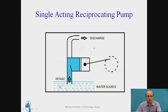The atmospheric pressure acts on the water surface. This atmospheric pressure is higher compared to the vacuum created inside the cylinder, and due to this, water automatically rushes inside the cylinder portion. The cylinder gets filled with water as the piston moves in the outward direction.